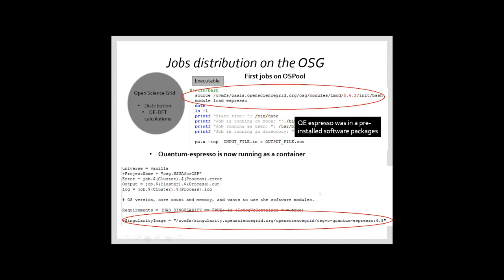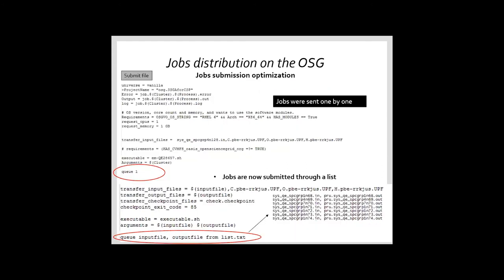So now we have Quantum Espresso in a container, which means Quantum Espresso can run in any OSG node. Another issue we had was that we sent the jobs one by one, so we had problems clogging the queue and that kind of stuff. So now we send the jobs through a list by groups, which makes a very good solution for all of us.